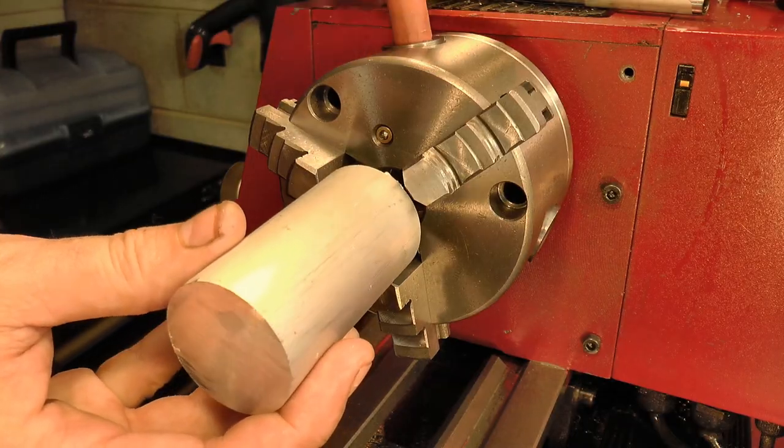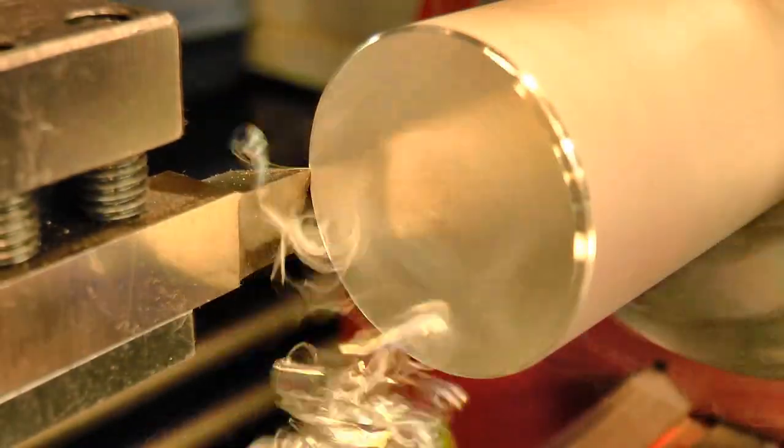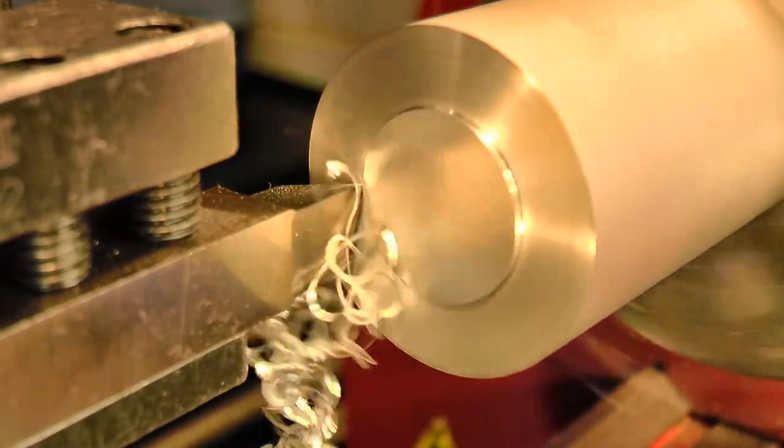So let's get started. I cut off a section of inch and a half rod, took a light facing cut, and then drilled and reamed the center.